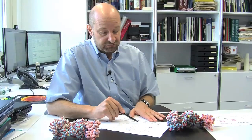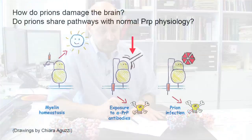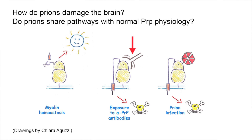In order to address this, we generated a series of mimetic antibodies — antibodies that will exert a similar effect as the infection with prions. What we found is that some of these antibodies, which recognize a specific portion of the prion protein in the globular domain, will trigger toxicity similarly to prion infection. I want to present one such antibody, which is called POM1.